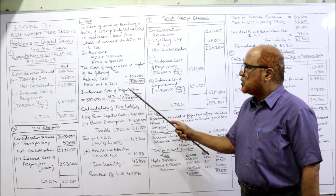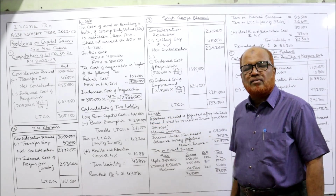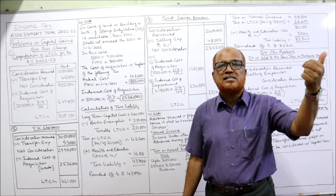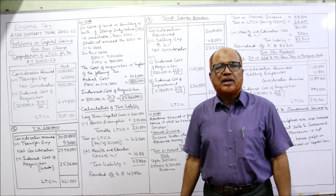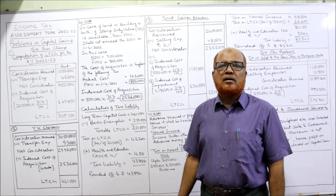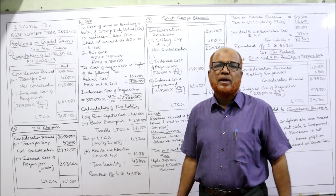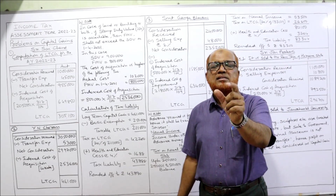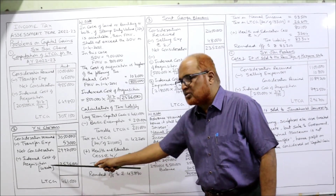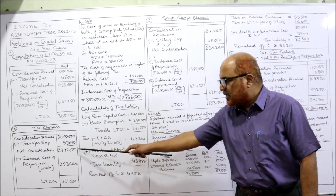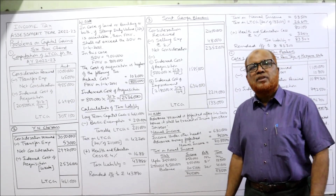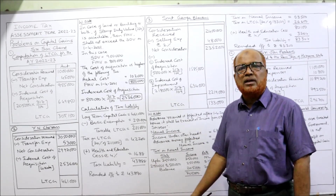So indexed cost of acquisition is Rs. 8 lakh multiplied by 317 — the current previous year index number for 2021-22 notified by the central government. If not given, remember the index for the current previous year is 317. Divided by the index number on 1st April 2001, which is 100, because the asset was purchased before 1st April 2001, so the index number of 2001-2002 is taken as 100. This gives Rs. 25,36,000 as the indexed cost of acquisition. Deducting gives long-term capital gain of Rs. 4,61,000.